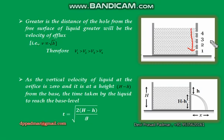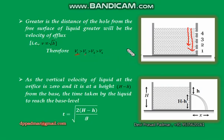As this distance increases, velocity of efflux will also increase. For example, in this diagram, hole number 1 has the maximum distance from the free liquid surface. Therefore, the velocity of efflux through this hole is maximum — V1 is maximum. Then comes V2, V3, and V4. Greater the distance of the hole from the free surface of liquid, greater will be the velocity of efflux.